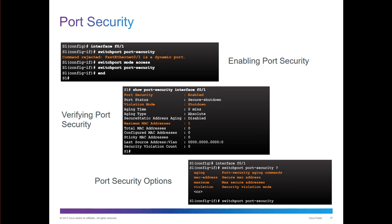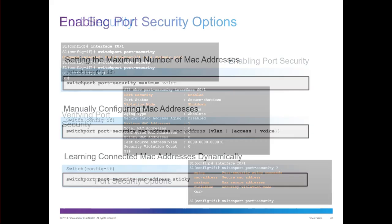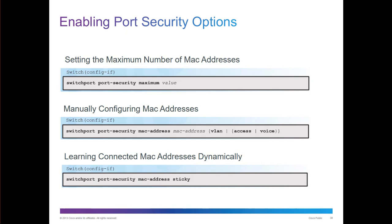Normally violation is set to shut down — it'll turn off the port — but maybe you want a different option. Setting the maximum number is done with 'switchport port-security maximum' and specifying how many you want. You can set a sticky MAC address if necessary — sticky MAC addresses allow you to learn it dynamically. You can set it to learn one address sticky, and the first MAC address it learns is the one it remembers.